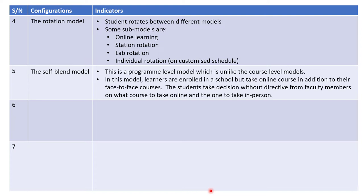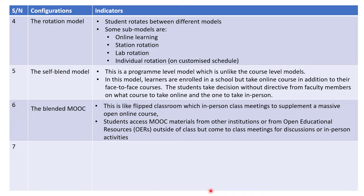Then we have the blended MOOC. This is like a flipped classroom, which uses in-person class meetings to supplement a massive open online course. Students access MOOC material from other institutions or from open educational resources outside the class, but come to class meetings for discussion or in-person activities. So this is another way you could equally flip your classroom — if you have a good MOOC, you can refer your students to use it, then come to class to discuss the content.